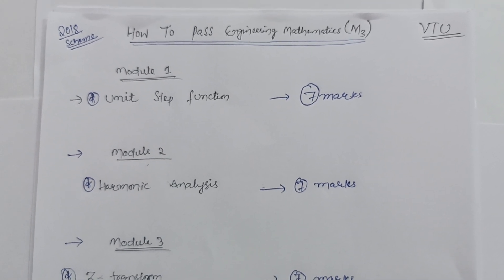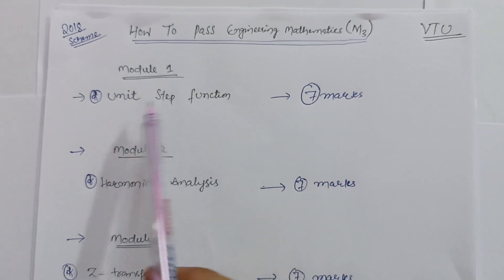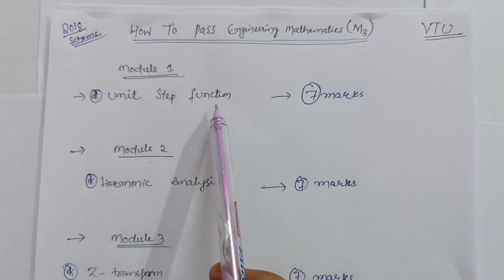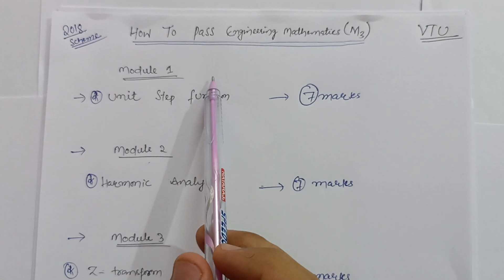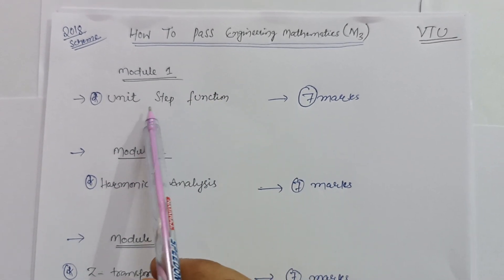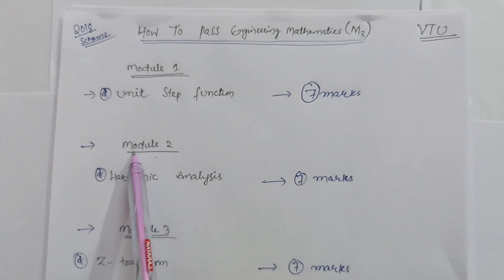So in first module, there is a unit step function. This particular topic you have to refer, then you can score 7 marks. The name of the module first is Laplace Transform. Only one topic you have to cover is unit step function, so this carries 7 marks in this module.